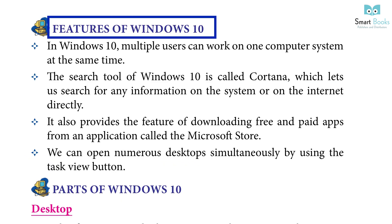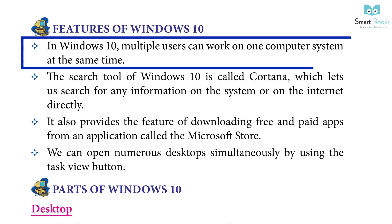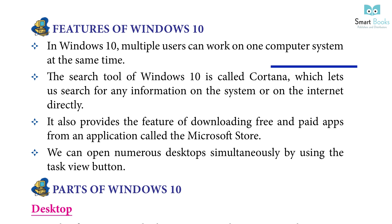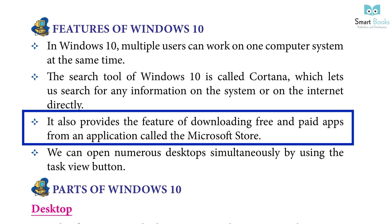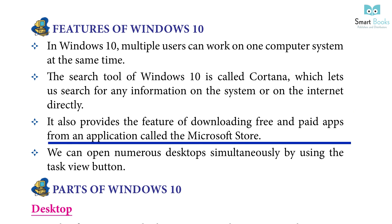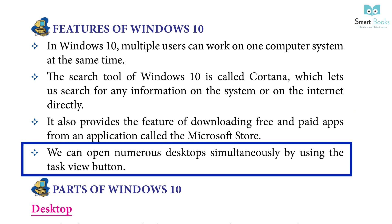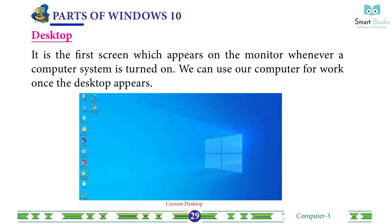Features of Windows 10: In Windows 10, multiple users can work on one computer system at the same time. The search tool of Windows 10 is called Cortana, which lets us search for any information on the system or on the internet directly. It also provides the feature of downloading free and paid apps from an application called the Microsoft Store. We can open numerous desktops simultaneously by using the Task View button.